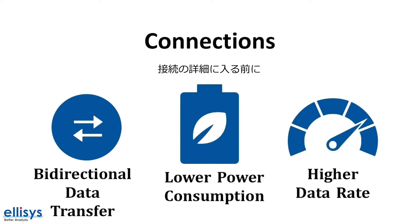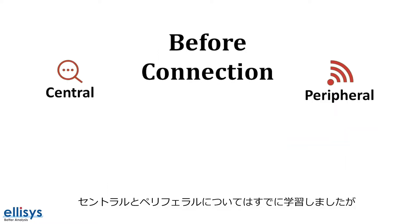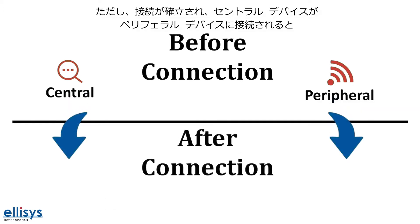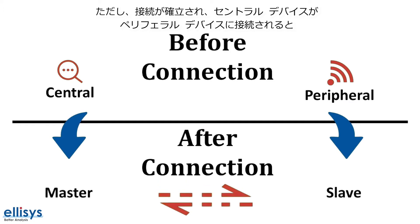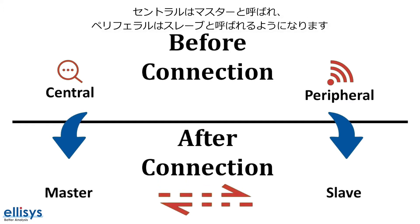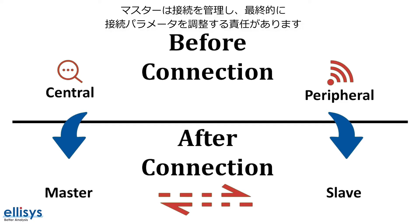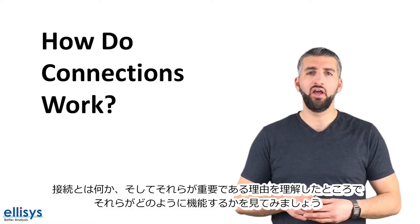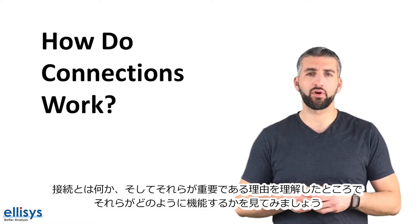Before we get into the details of how connections work, let's go over some important terminology. We already learned about the central and peripheral roles, and these exist before a connection is established. However, once we have a connection and the central device connects to the peripheral, the central becomes known as the master, and the peripheral becomes known as the slave. The master has the responsibility of managing the connection and having the ultimate say in the connection parameters.